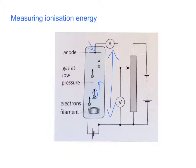The potential difference is increased and eventually ionisation will occur. Ionisation near the anode causes a much greater current to pass through the ammeter, and so we will see an increase in the current at the ionisation energy.